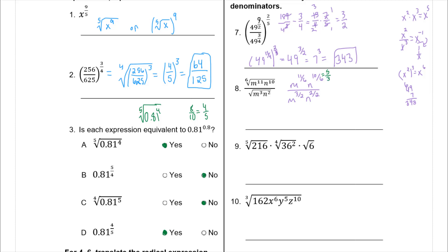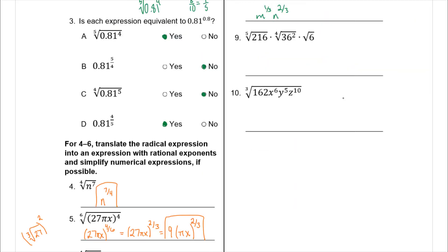Now subtract exponents, keeping m's and n's separate. For M: 11/6 minus 3/2 — convert 3/2 to 9/6 — gives 2/6 which is 1/3. For n: 5/3 minus 1 gives 2/3. So the answer is M to the 1/3 times n to the 2/3.